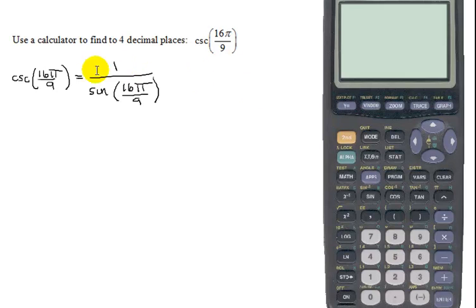So now I can just put this expression into the calculator. I want to find 1 divided by the sine. Notice my calculator, when I hit sine, opens parenthesis. 16, I don't have to put multiply, I can if I want, times pi. Remember, pi is up here on this calculator. Divided by 9 and close parenthesis.